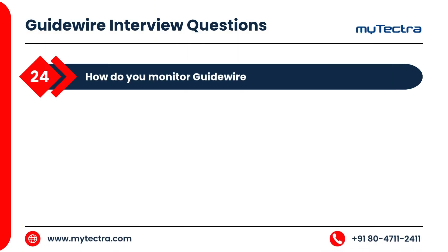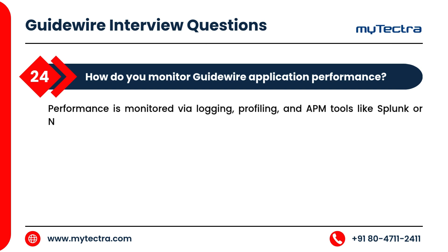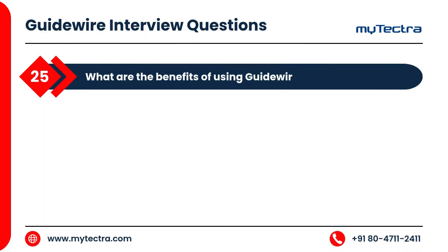How do you monitor Guidewire application performance? Performance is monitored via logging, profiling, and APM tools like Splunk or New Relic. Guidewire provides built-in metrics for database queries, workflows, and API calls.